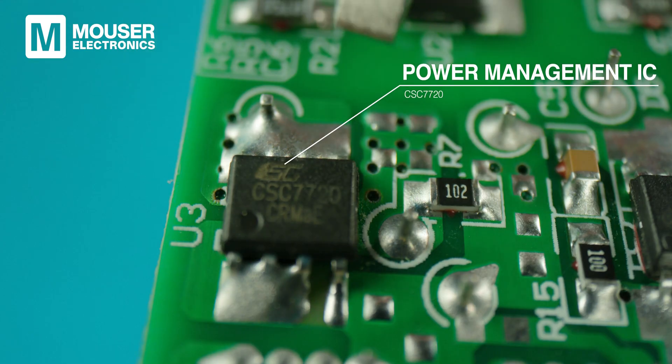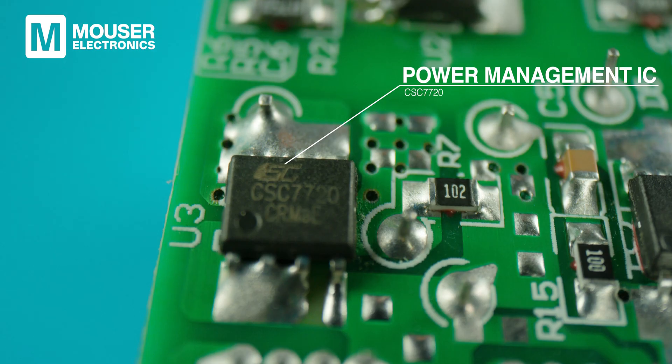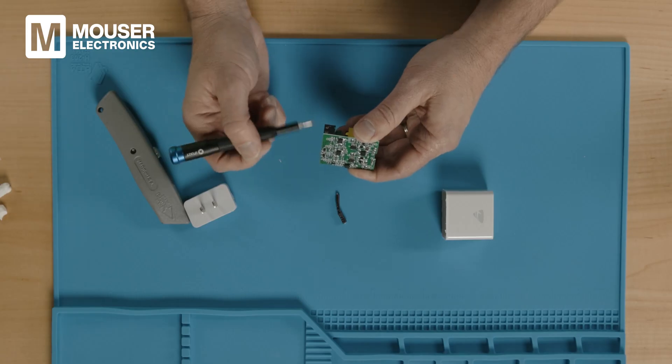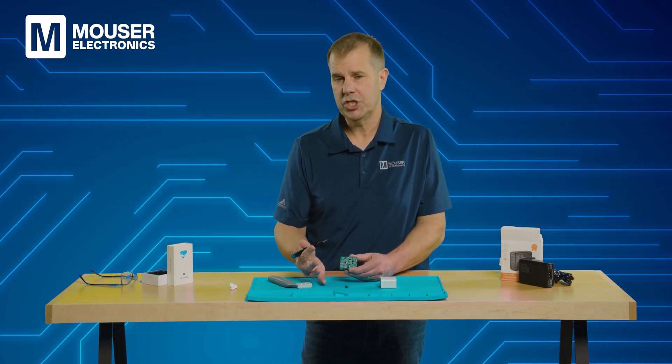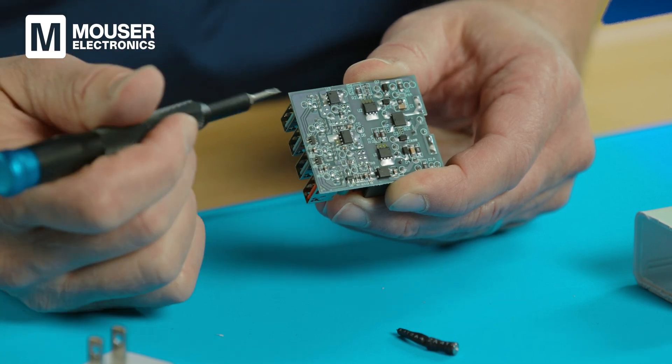Up here, the part labeled U3 is a CSC7720 product. It's either a power management IC or possibly a power MOSFET. With a lot of these smaller components, it's hard to find online parts that match the numbers that are on the top coat. Sometimes that's because it's not shared because it's proprietary. Sometimes it's because they don't get the entire part number on the product.